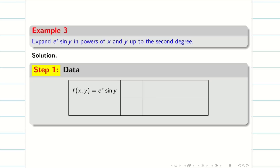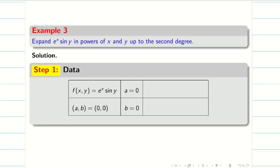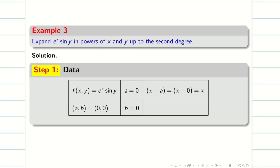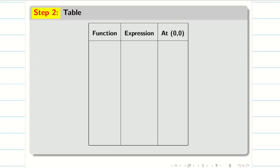The given function is e^x sin y. Step 1: fill the data. Expand e^x sin y in powers of x and y up to second degree. The point (a, b) is not given, so we take it as (0, 0). Therefore a = 0, b = 0, and x minus a = x, y minus b = y.